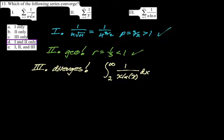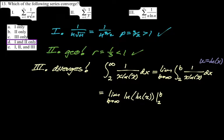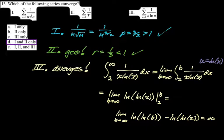Setting up the integral test with the limit as b approaches infinity from two to b, letting u equal natural log of x. Substituting in, as b goes to infinity the natural log of the natural log of infinity is infinity, so this gives us infinity, which diverges — and therefore the series diverges. My answer for converge is one and two. On multiple choice you want to hit and move: if you think it diverges, mark it and come back if you have time.